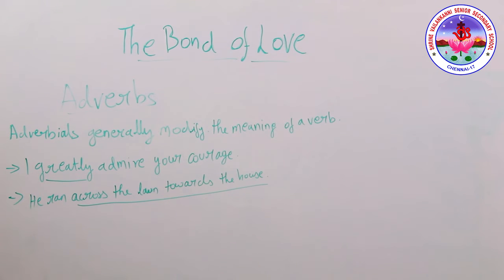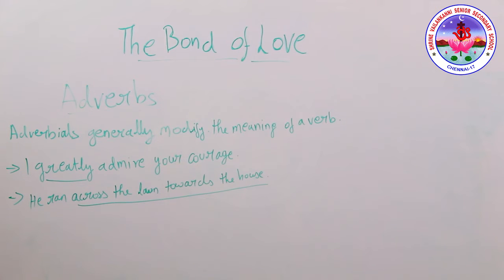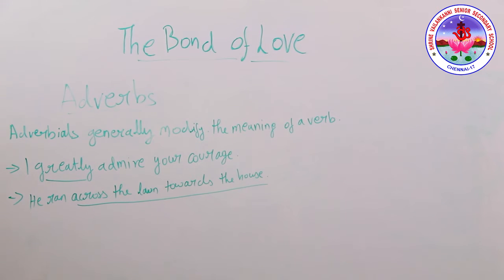For example: 'He ran across the lawn towards the house.' Here 'he' is the subject and 'ran' is the verb, and 'across the lawn towards the house' is the adverbial. Adverbials need not be only a single word — they can also be word groups, prepositional phrases, or even clauses. They are sometimes called adjuncts.